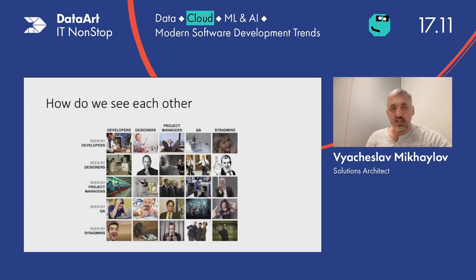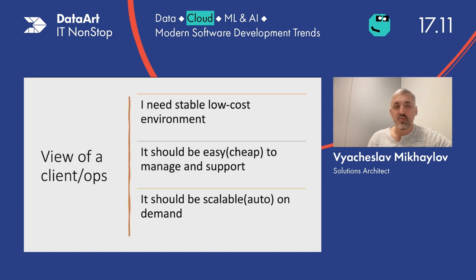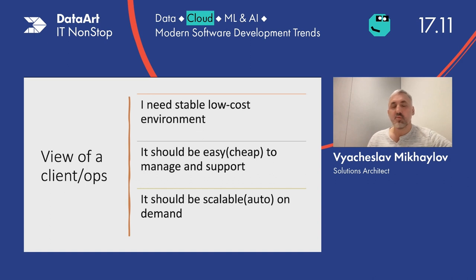Unfortunately, reality is different. This funny picture — you've probably seen it on the internet — shows that people treat each other differently. From the client or operations perspective, what do they need? They need a stable, low-cost environment. They want to achieve maximum while spending minimum money, because that's what business is about. They need to be efficient, watch their costs, and be conservative — because it's all about money.